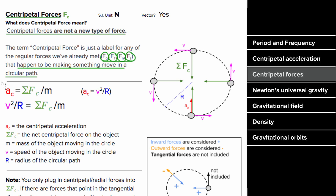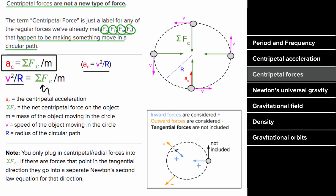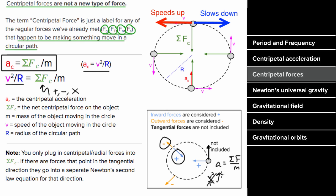These forces still follow Newton's second law, but using centripetal forces means you'll also have to use the expression for centripetal acceleration. If a force is directed radially inward toward the center of the circle, you count that force as positive. If a force points radially outward from the center, you count that as negative. And if a force is directed tangentially to the circle, you don't include it in this calculation — those tangential forces change the speed of the object, while the centripetal force changes the direction.